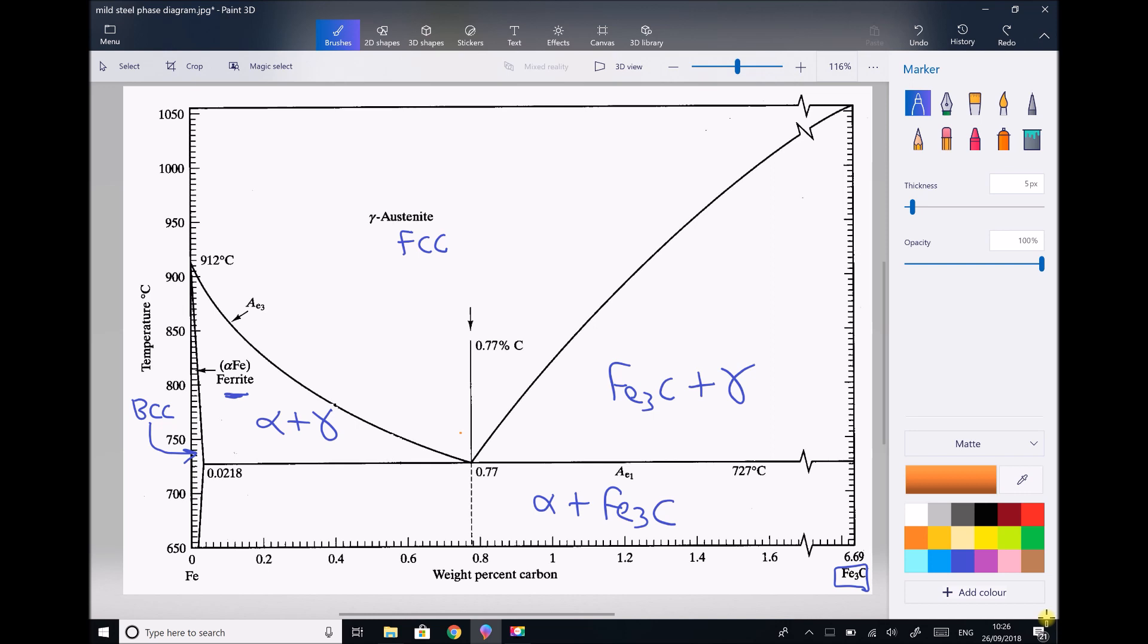The first thing to discuss is what happens at our eutectoid point. At our eutectoid point we are going to go directly from austenite FCC into our laminar layers of alpha plus iron carbide, or ferrite plus cementite. I'll sketch it up here at the top. At that eutectoid point we are going to go directly into our layered structure, and those layers will be alpha ferrite and cementite Fe3C. We have pearlite with alternating layers of alpha and the ceramic material iron carbide. Very similar to our eutectic point where we went directly from liquid to solid, here we are going directly from gamma FCC into alpha BCC plus cementite.